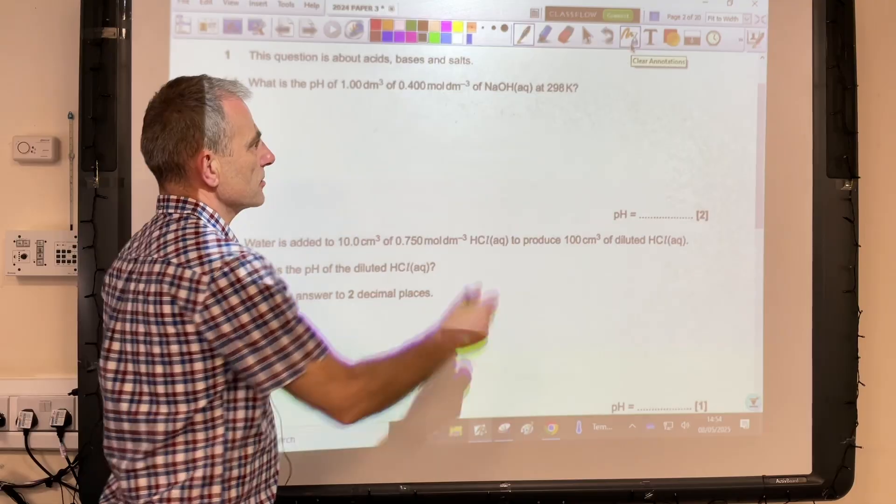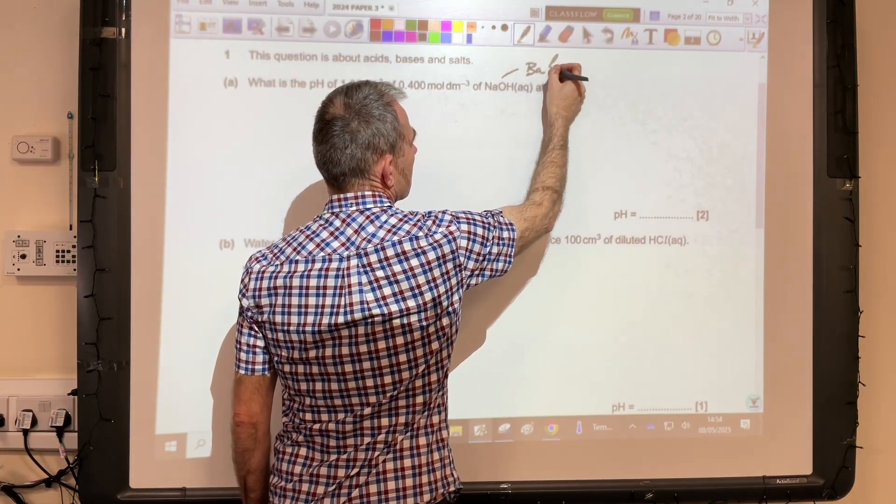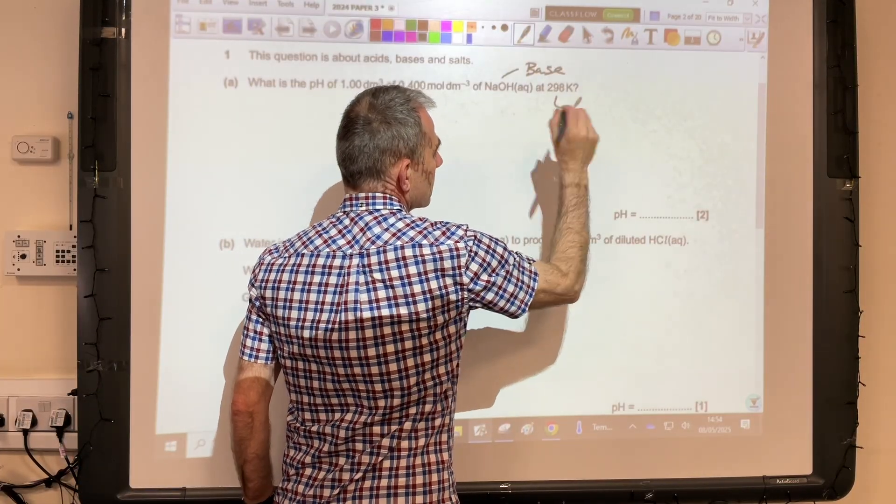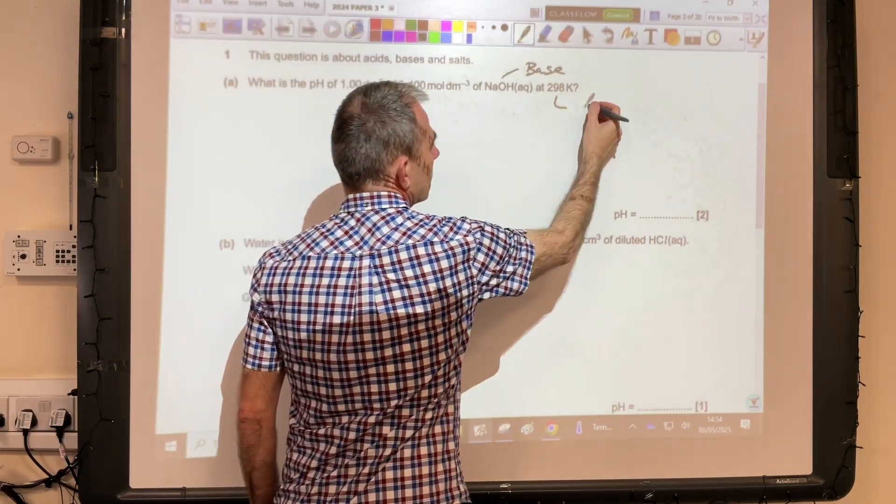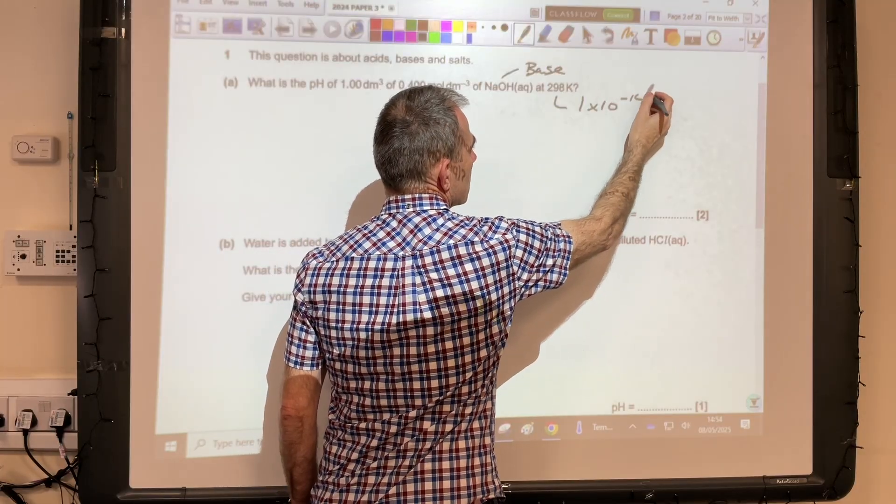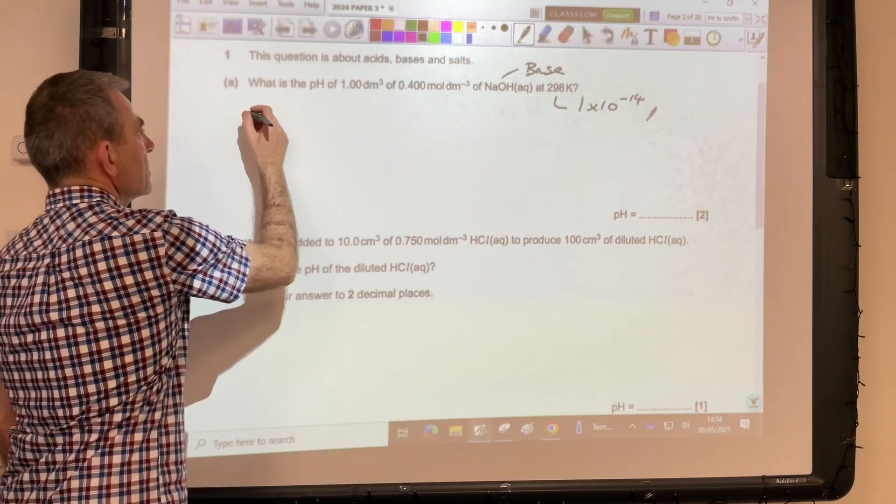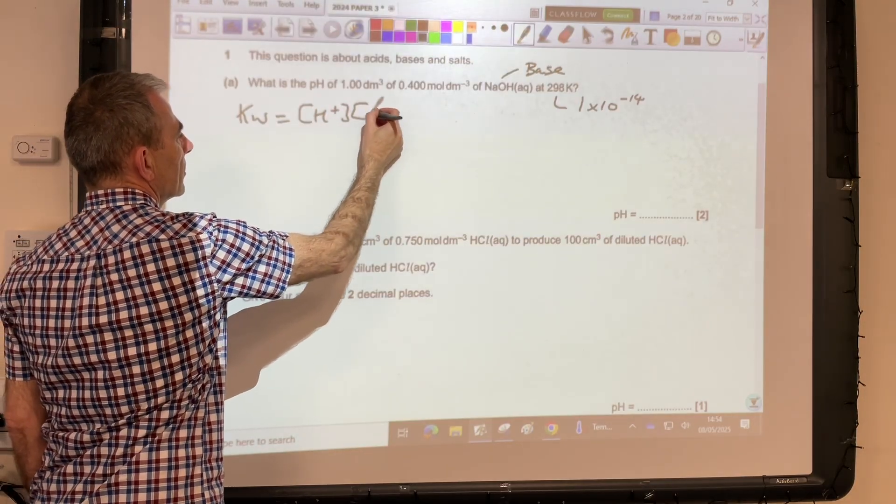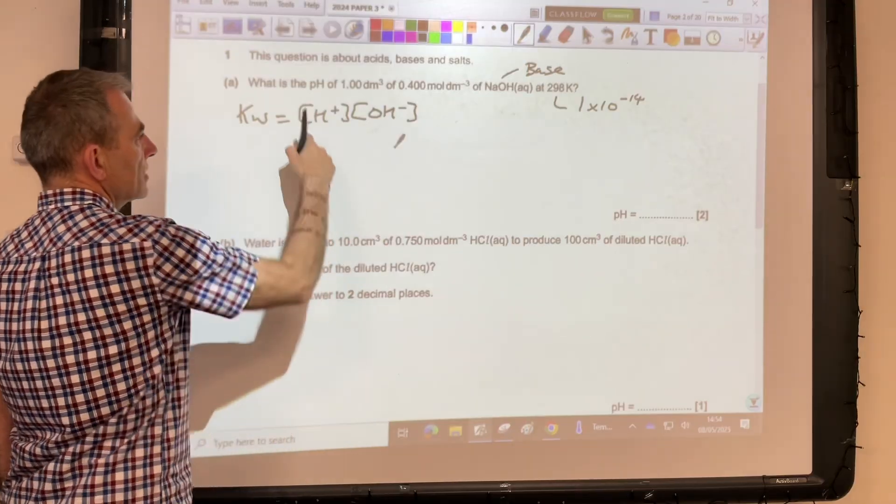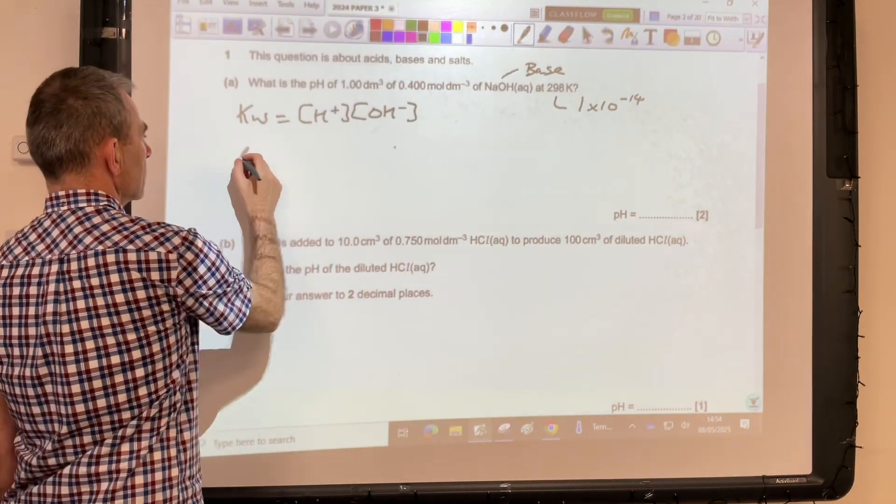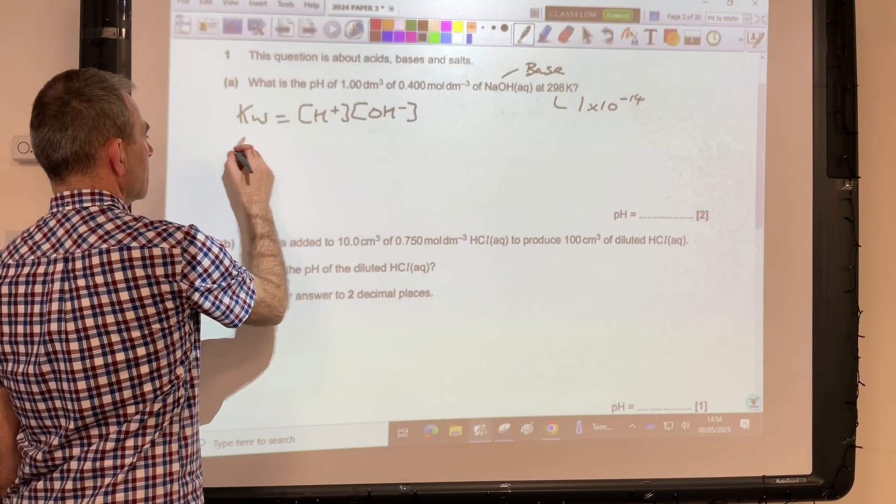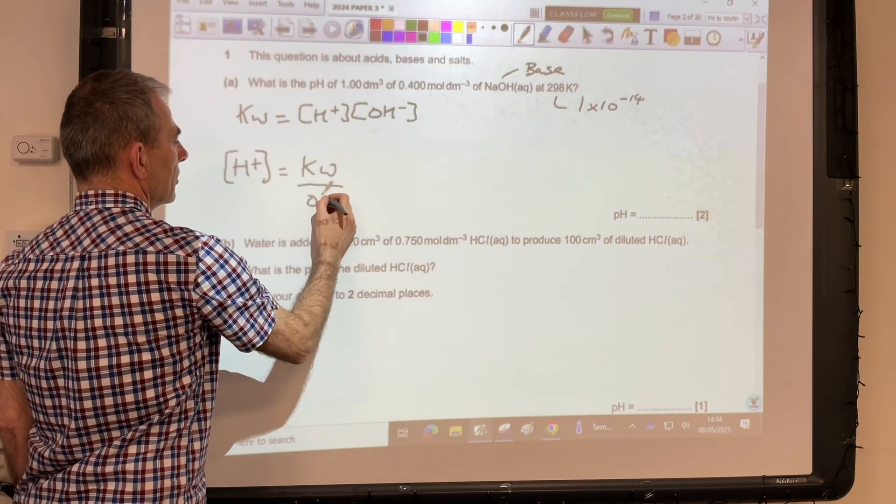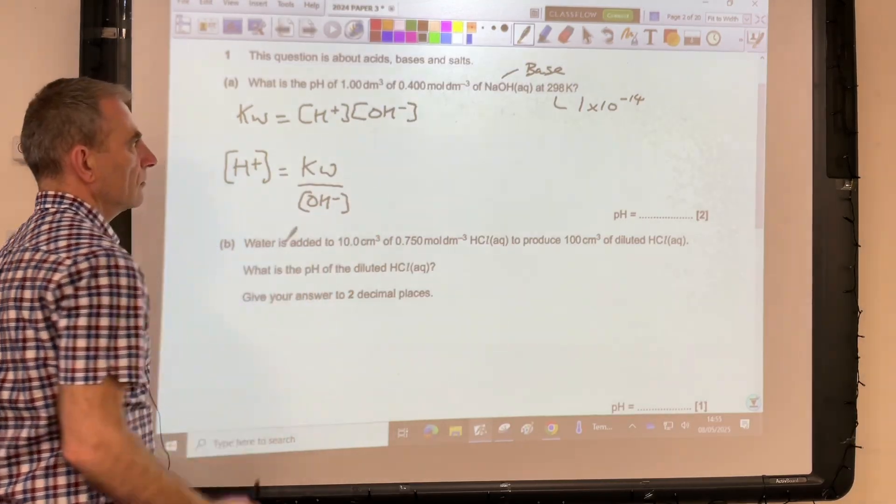Part A: What's the pH of this sodium hydroxide solution? Sodium hydroxide is a base, so we're going to use the kW expression. kW has a fixed value at 298 Kelvin of 1×10⁻¹⁴. What is the kW expression? kW equals H⁺ concentration multiplied by OH⁻ concentration. To get the pH, we need the H⁺ concentration, so we'll rearrange for that: H⁺ concentration equals kW over OH⁻ concentration.